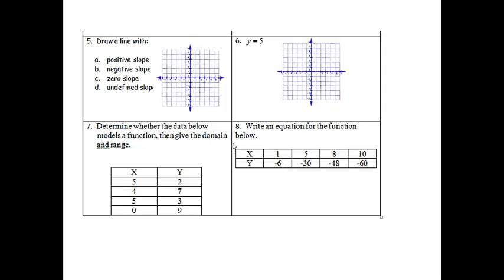Problem 5. Draw a line with, first of all, a positive slope. So positive slope, I know it's going to go up as I go from left to right. So this would be a line that has positive slope. I'll label that as A. B, negative slope, which means as I go from the left to the right, the line is going to go down. So that would be B.